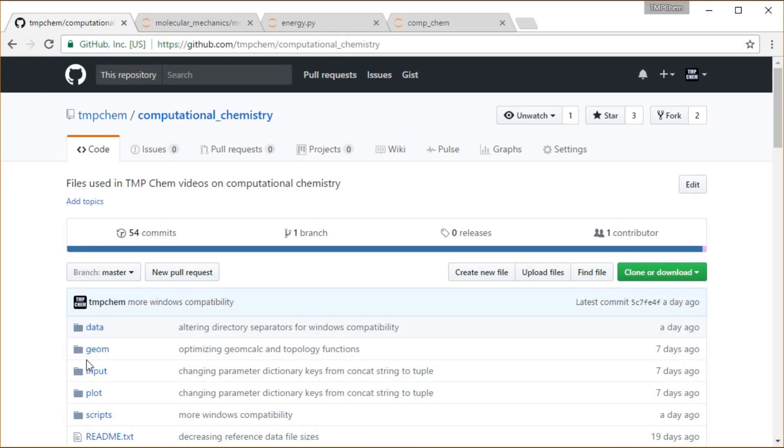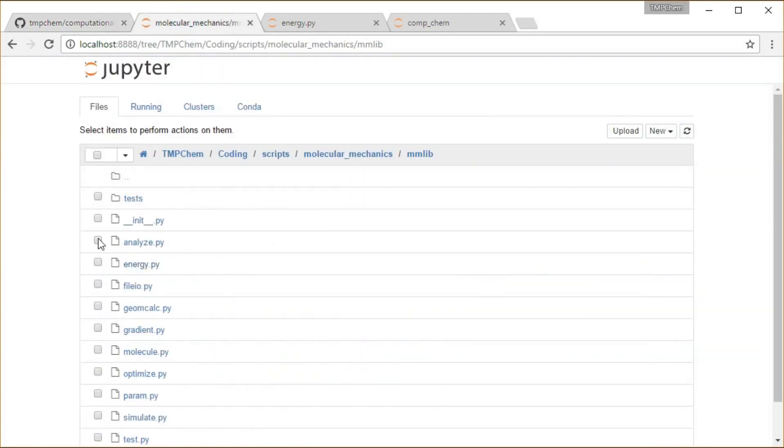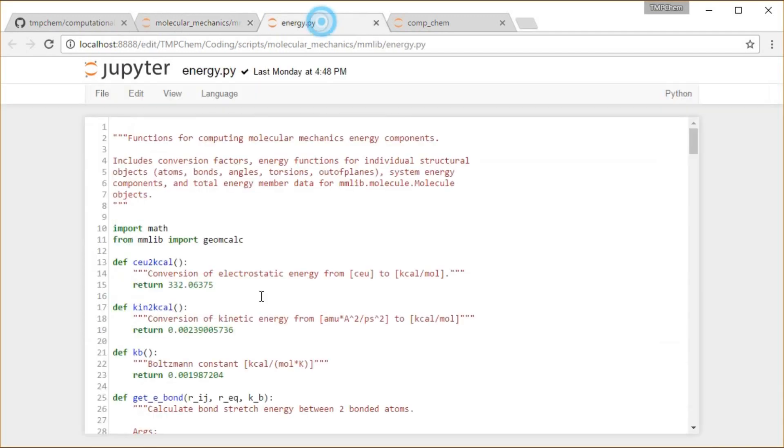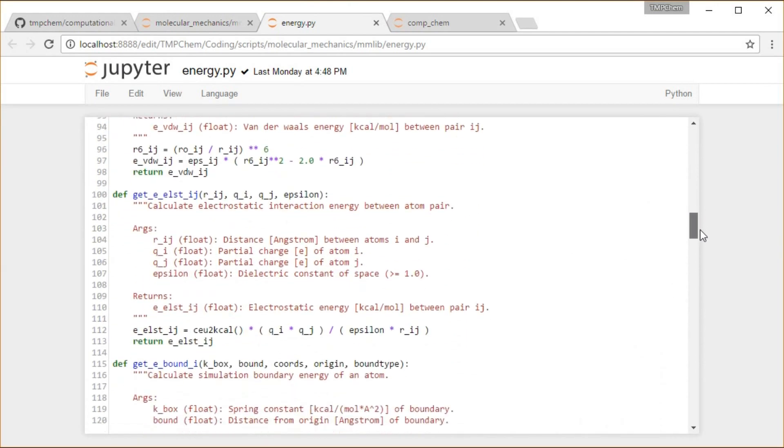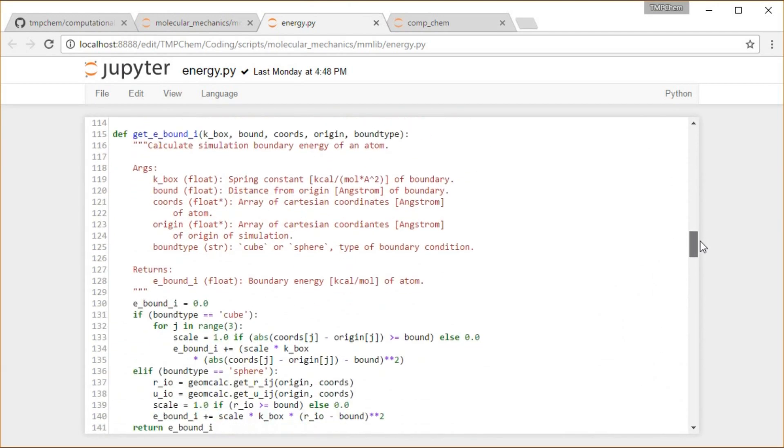So if you notice in my computational chemistry GitHub repository, in this Jupyter notebook, down in the Scripps molecular mechanics mmlib directory, I have this energy module, energy.py, where we compute the energy functions. And the function there I actually include for the boundaries, so you get E bound.